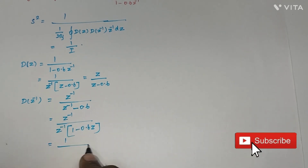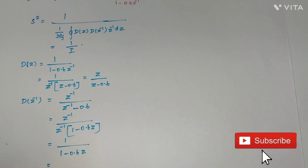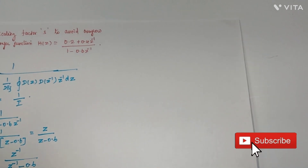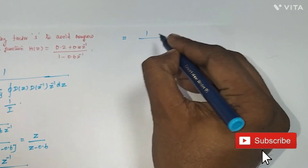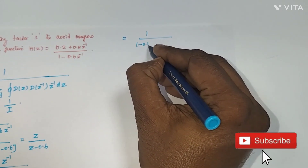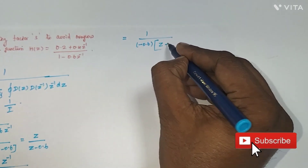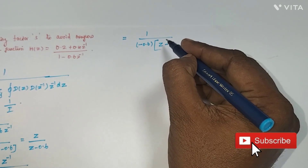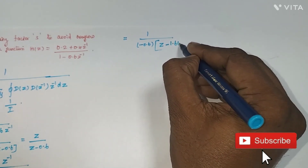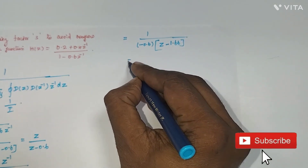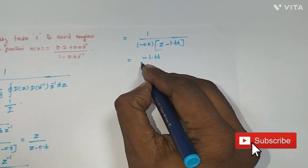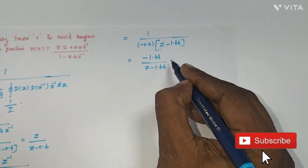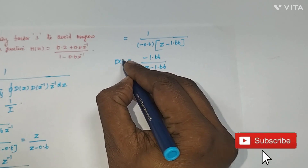After cancellation, D(z⁻¹) simplifies to 1 divided by (1 minus 0.6z). Taking 0.6 common outside, this becomes 1 divided by 0.6 times (1/0.6 minus z), which gives D(z⁻¹) = minus 1.66 divided by (z minus 1.66). This is our D(z⁻¹).